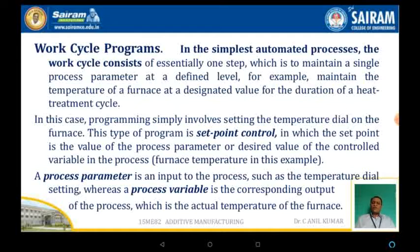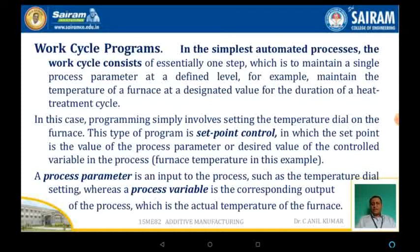The work cycle program is the simplest automated process. That cycle consists essentially of one step in which a single processing parameter is maintained, and that can be defined as maintaining a level or maintaining a temperature in a furnace. This is one example in a heat treatment cycle. In this case, the program simply involves setting a particular temperature for the duration.